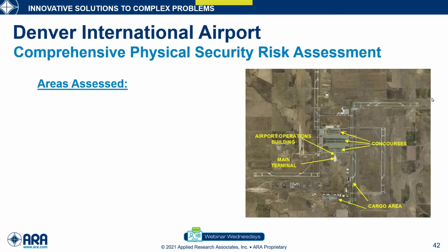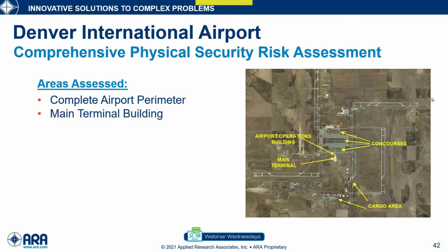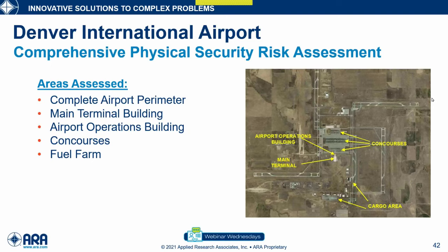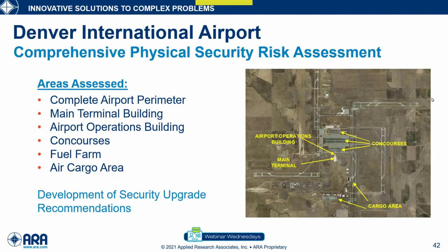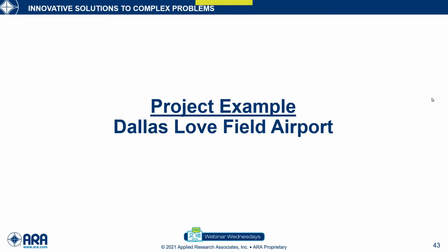We also performed the comprehensive physical security risk assessment, where we looked at the complete airport perimeter, the main terminal building, airport operations building, concourses, fuel farm, and air cargo area, then developed security upgrade recommendations for each.